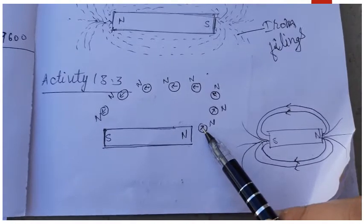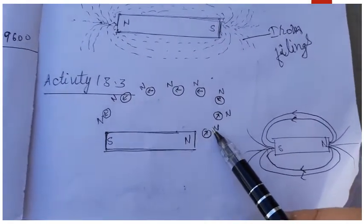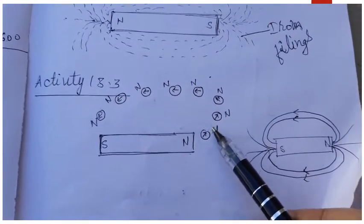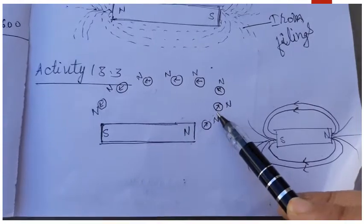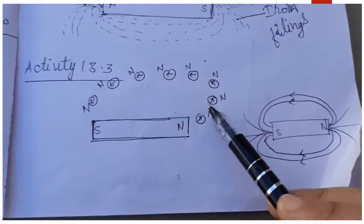Take the compass again. Now you place the compass near the north pole and whatever direction the pointer points, you mark a dot and place the compass next at that point again.